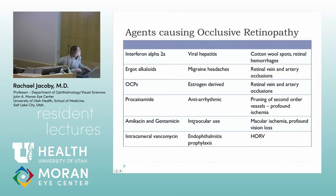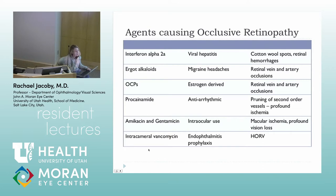Some medications are used intraocularly and can cause retinal vascular problems. Gentamicin can cause profound visual loss from macular ischemia. More recently, case reports have described intracameral vancomycin — used as endophthalmitis prophylaxis after cataract surgery — causing hemorrhagic occlusive retinal vasculitis, felt to be a type 3 hypersensitivity reaction. Most cataract surgeons have gone away from using intracameral vancomycin because of these cases.